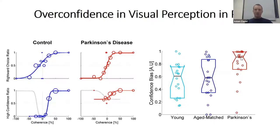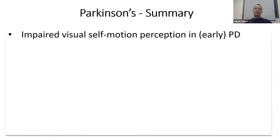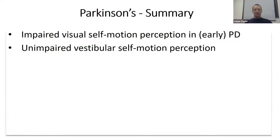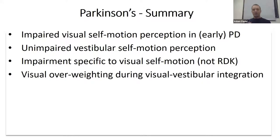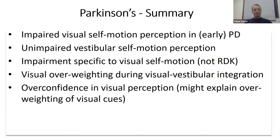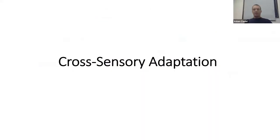When we compared the confidence bias across Parkinson's versus control groups, we found that Parkinson's patients were significantly overconfident in their choices. This bears out our hypothesis that they are overconfident at least in this task. To summarize the Parkinson's data: we show impaired visual self-motion perception, unimpaired vestibular self-motion perception, a visual impairment specific to self-motion (not general visual motion), a multi-sensory integration deficit with overweighting of visual cues, which may be explained by overconfidence in visual perception.